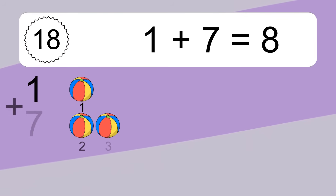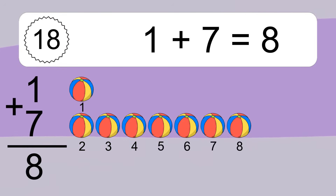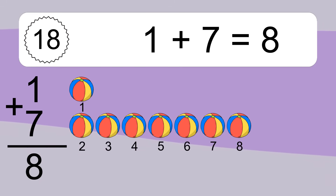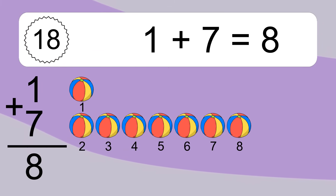1 plus 7 equals what? 1 plus 7 equals 8. Let's count it. 1, 2, 3, 4, 5, 6, 7, 8.